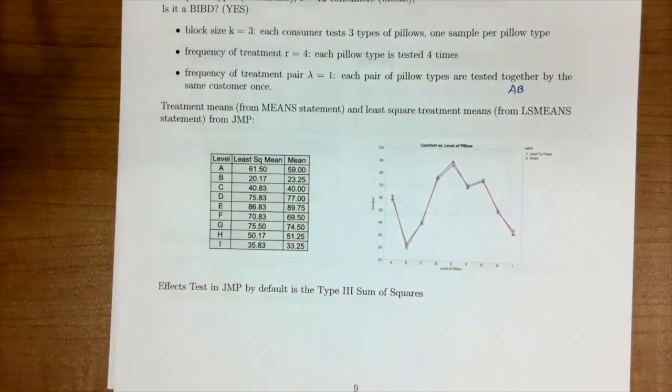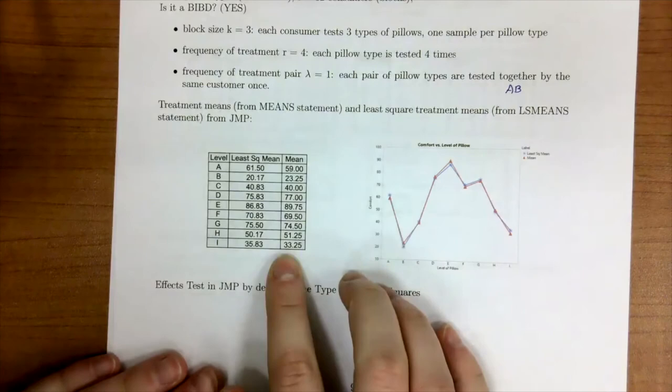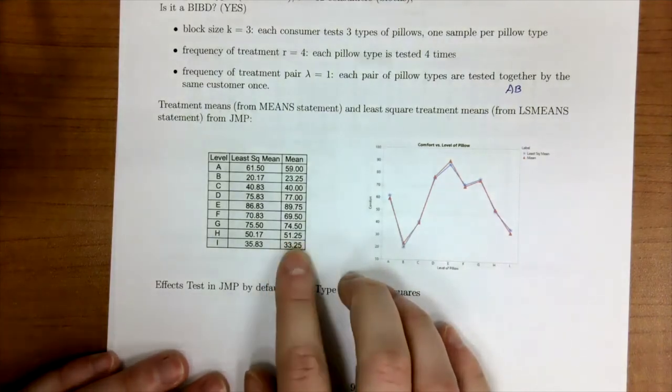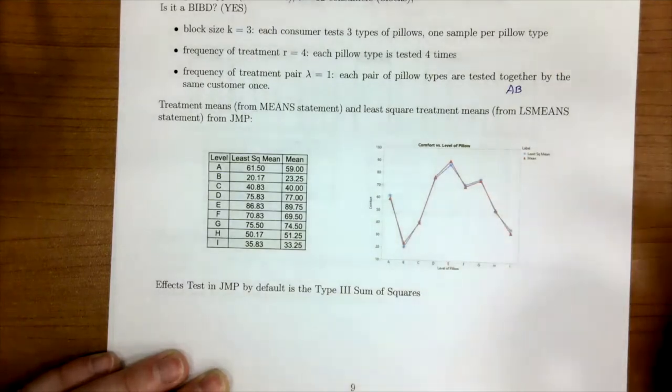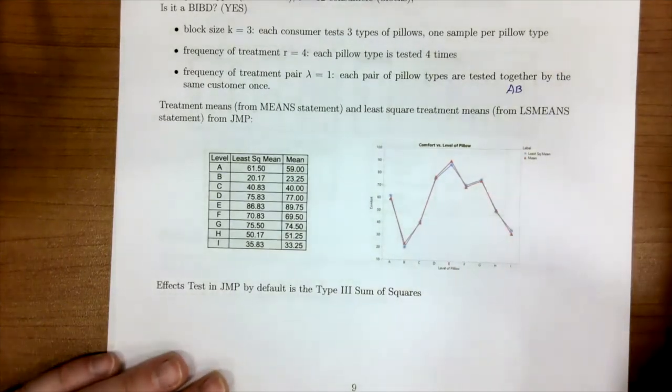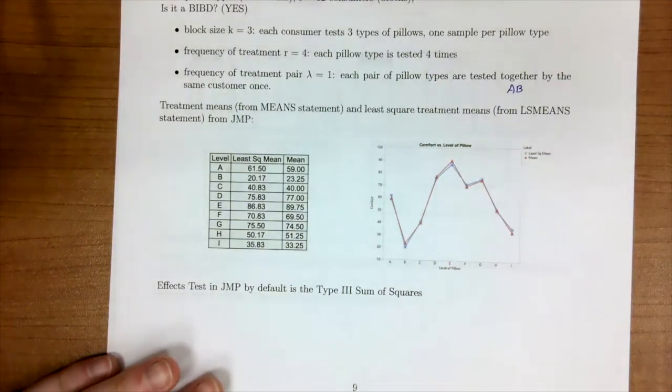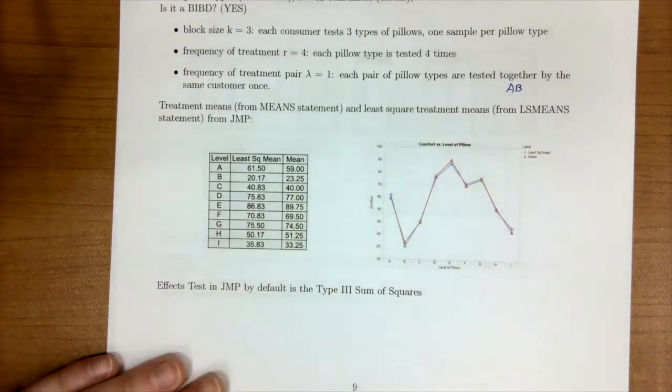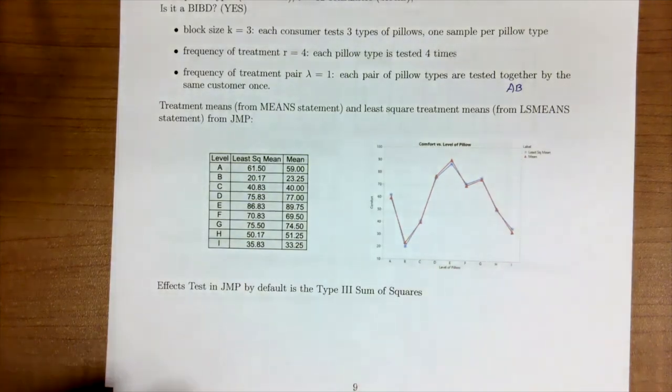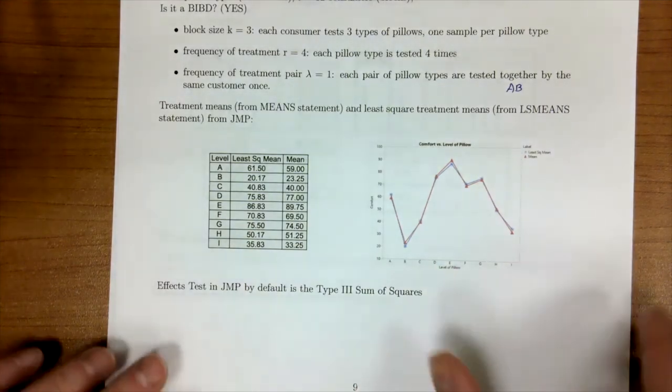Another thing that we talked about in lesson 6a was our means. So our treatment means versus our least square treatment means. This output is just comparing our means with our least square means, and this is plotting it to show you that there is a difference. JMP will default to outputting the least square means and using the type three sums of squares. R users, I will show you how to make sure you're doing that.